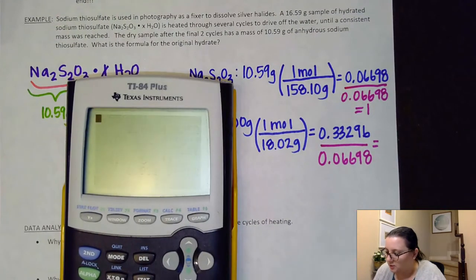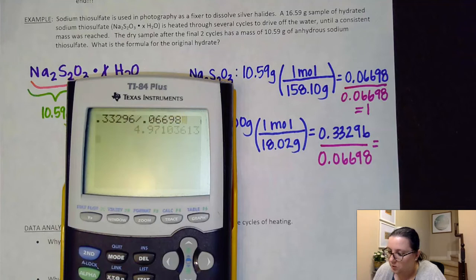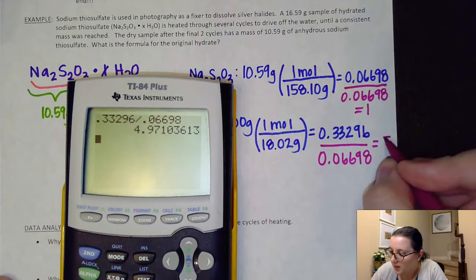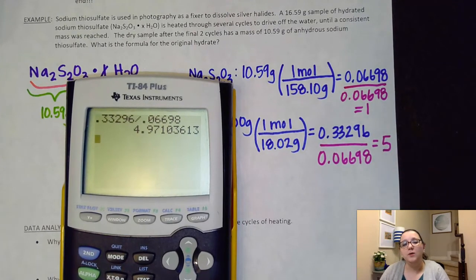Where it's going to come out really close to a whole number. It came out to 4.97, so obviously I could round that to five. However, I will warn you that when you're actually doing this in lab, depending on the success of your lab, that may or may not come out to a perfect whole number.